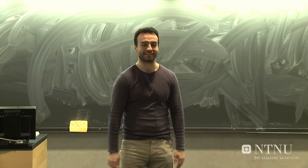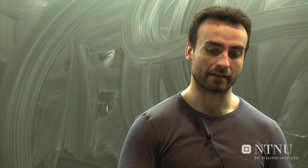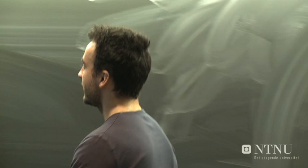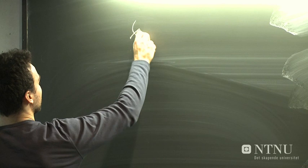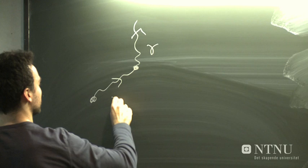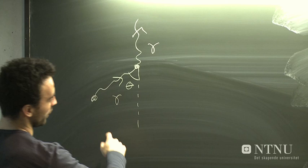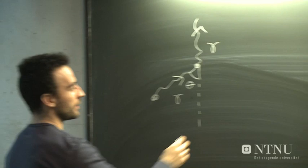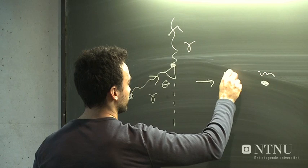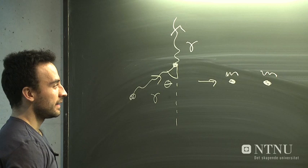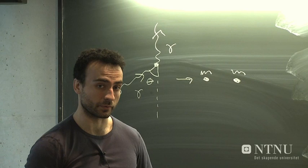Okay, welcome! So we'll start today by finishing the example we discussed at the end of the previous lecture, namely these two photons colliding and producing a pair of mass-full particles. We consider this example in order to illustrate the concept of threshold energy, which we also discussed at length in the previous lecture.